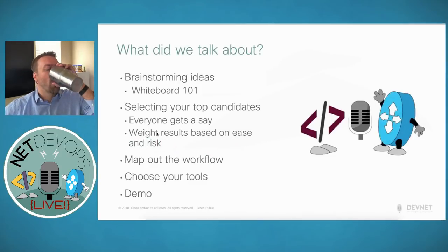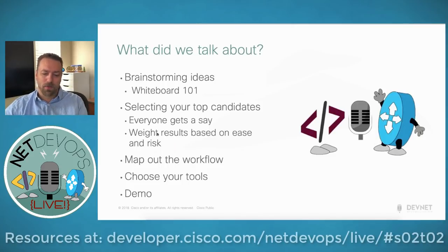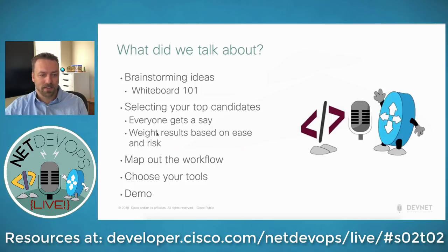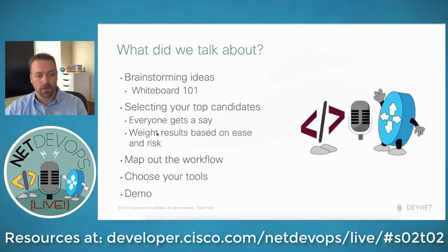To recap: get a bunch of people in a room and whiteboard ideas — you'll be amazed at what others are struggling with and spending time on. Whittle candidates down to something achievable that impacts the most people. Sit down and figure out how you would solve it manually before writing your script. Choose your tools wisely — I've given you a list, though it's not exhaustive. Hopefully you now have a few ideas of ways you can get started today with things you come up with in your whiteboard session.